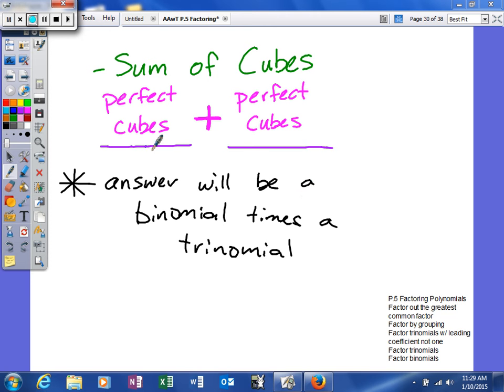So sum of cubes, you have a binomial, the first term is a perfect cube, the second term is a perfect cube, and this time there's a plus sign in between. Again, the answer will be a binomial times a trinomial.